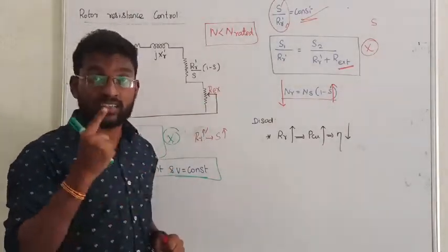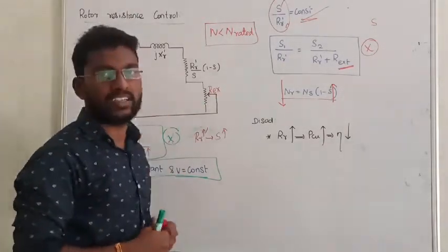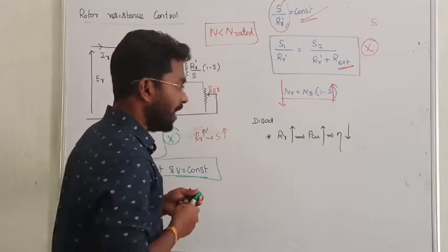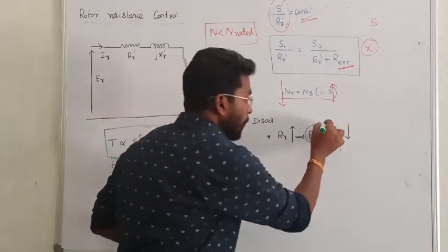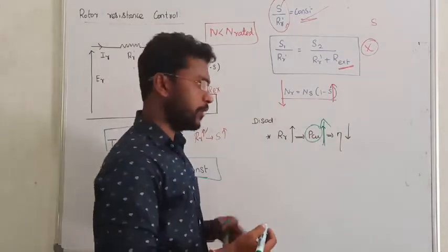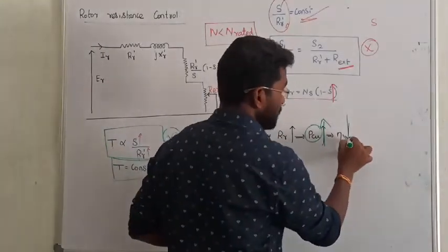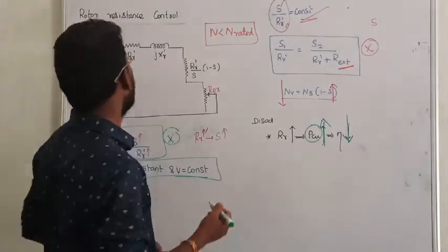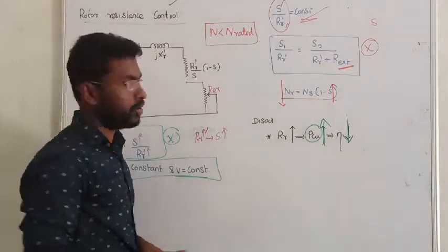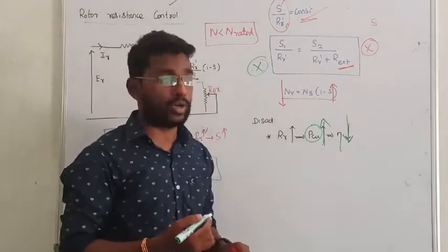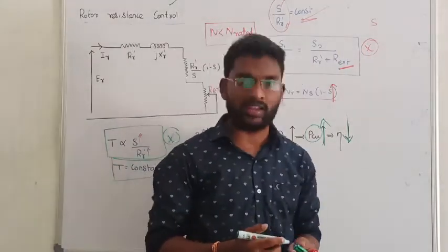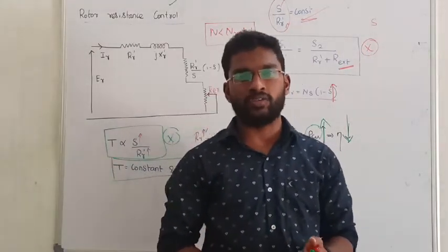What is the disadvantage? Additional resistance - there will be a loss, that is copper loss. In our induction motor copper loss will be increased. Loss is increased, so the motor efficiency is getting reduced. That is the drawback of rotor resistance control. So I hope you all understand. If you have any doubts you can ask in the comment section. Thanks for watching our videos, thank you all.